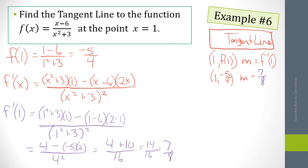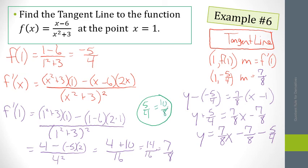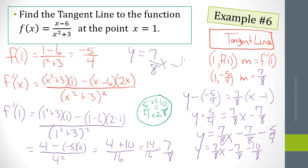Now we find the tangent line using point-slope form: y minus our y-value equals our slope times (x minus our x-value). So y + 5/4 = (7/8)(x - 1), which gives y = (7/8)x - 7/8 - 5/4. Since 5/4 = 10/8, our final answer is y = (7/8)x - 17/8. That is our tangent line — lots of fractions, so take your time and be very careful.